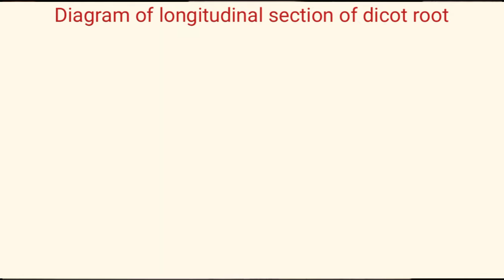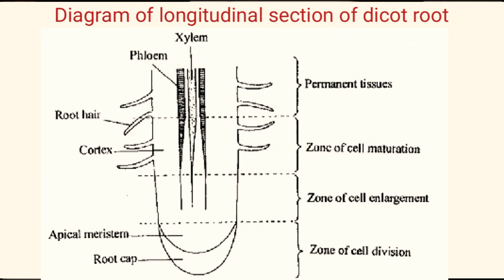Next we discuss the diagram of the longitudinal section of a dicot root. This is how the diagram looks like. The parts visible are: root hairs, cortex, phloem, xylem, pericycle, apical meristem, and the root cap. We can also see the regions of growth — that is, the zone of cell division, zone of cell elongation, and zone of cell differentiation. That is the end of our lesson for today. For more videos, subscribe to our channel.